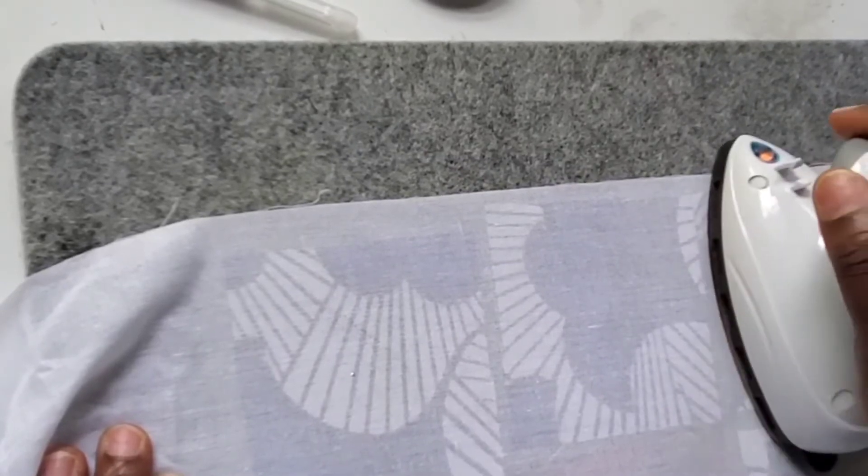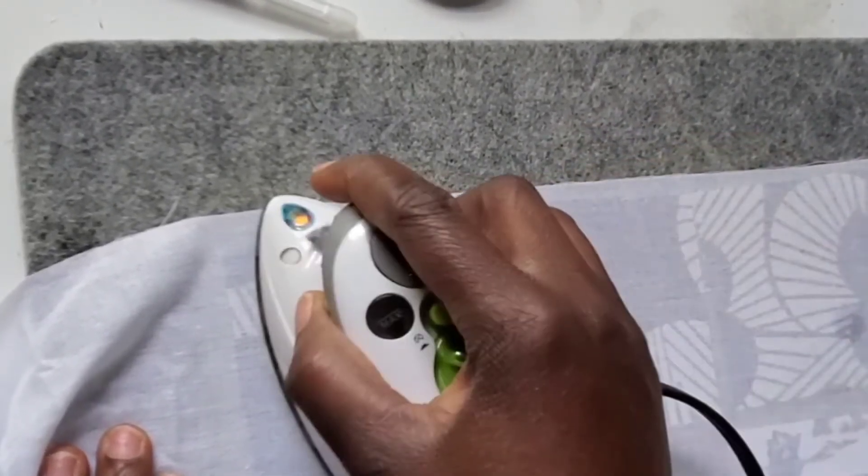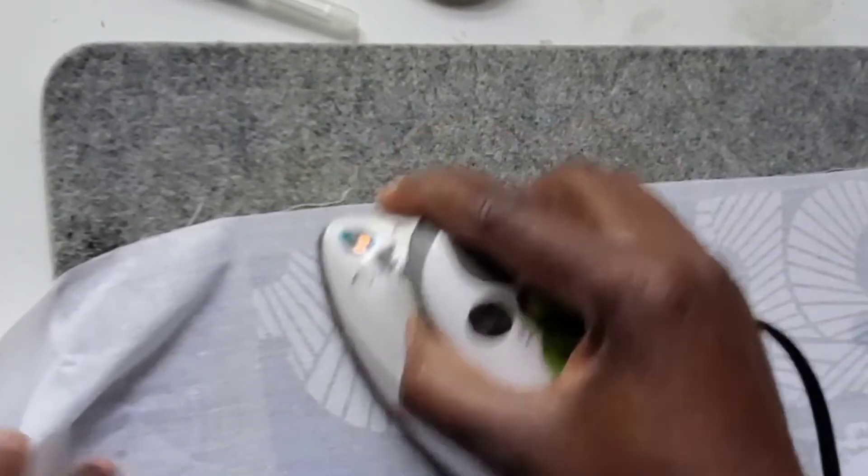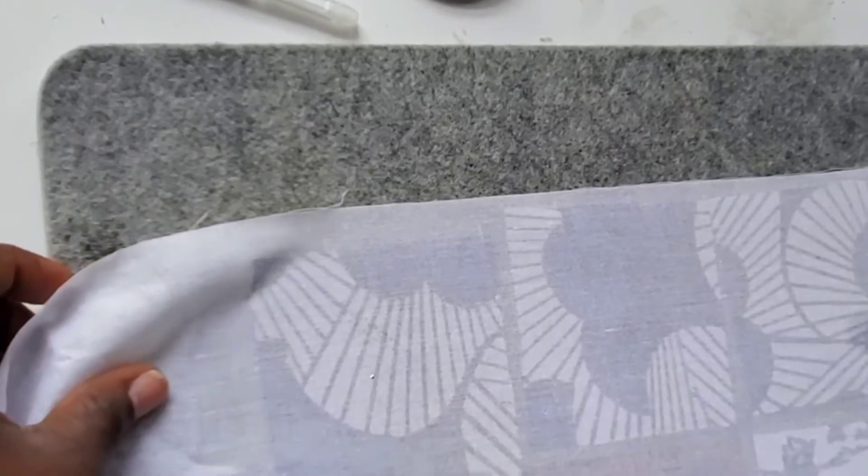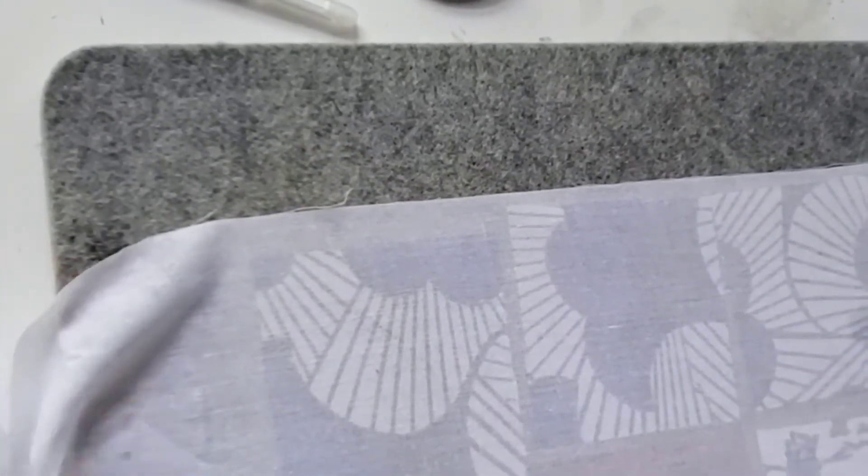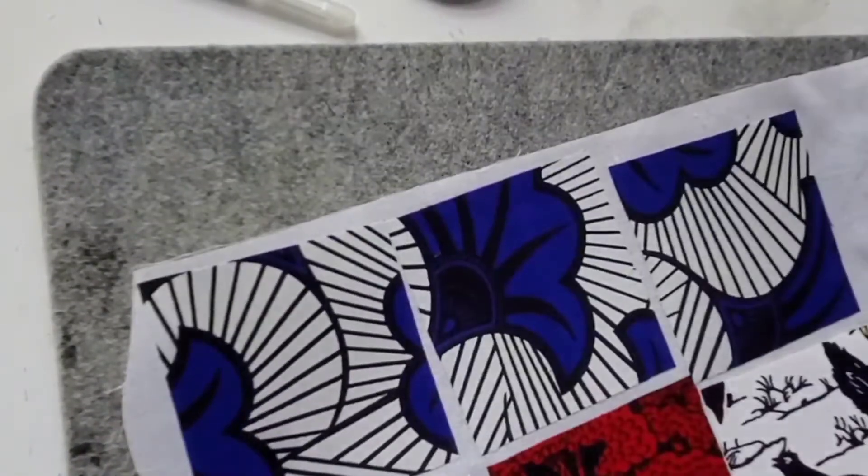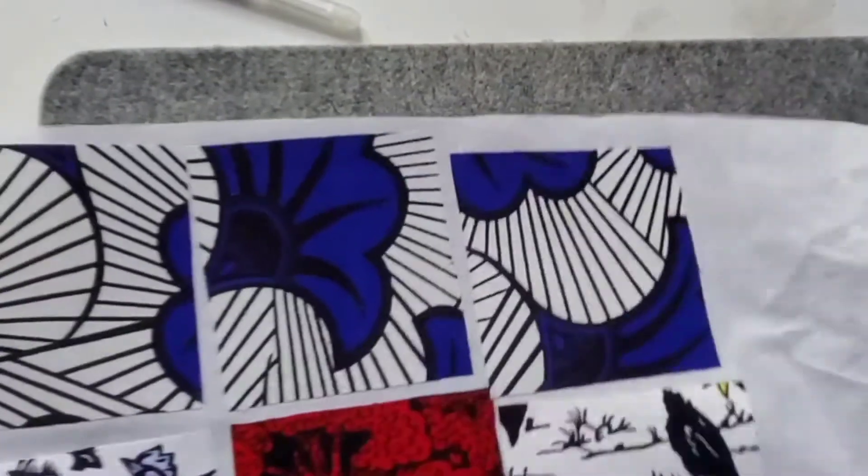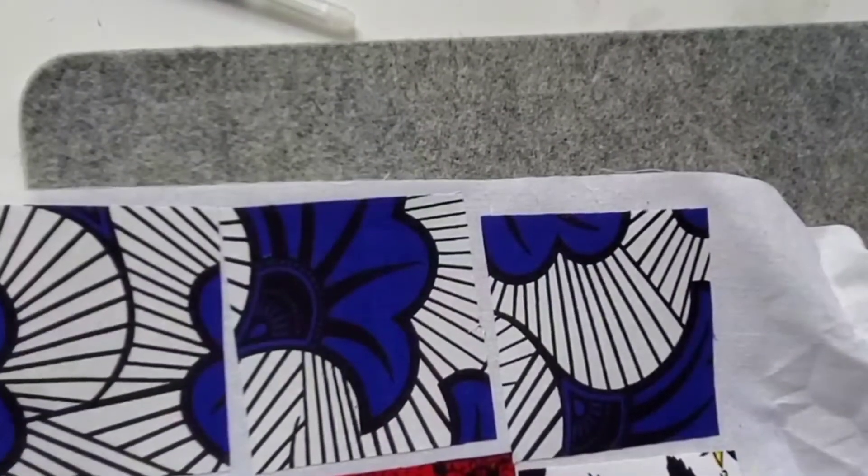What I do is I put it on each one for 10 seconds, so you just count it in your head - one, two, three - just do something for 10 seconds and then you just move it. How you know that it's adhered to the fabric is when you peel it like I'm peeling it here, the fabrics don't fall off and none of the fabric is coming off. I'm just gonna cut it and make it clean and that's it.